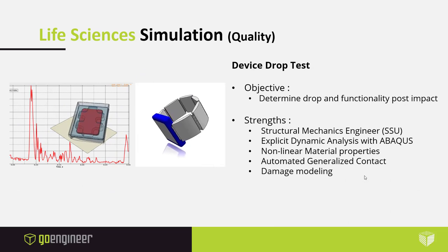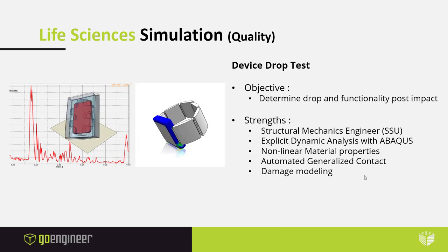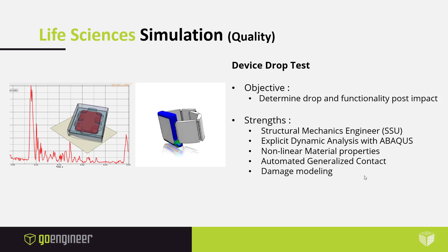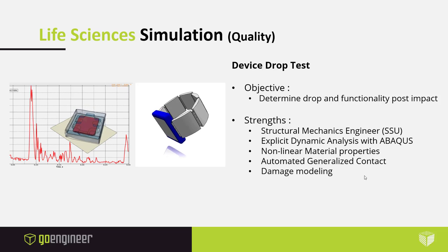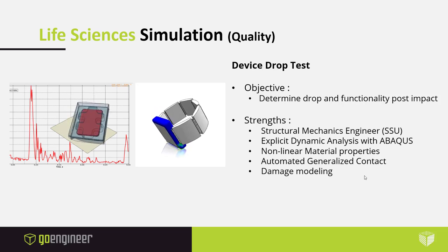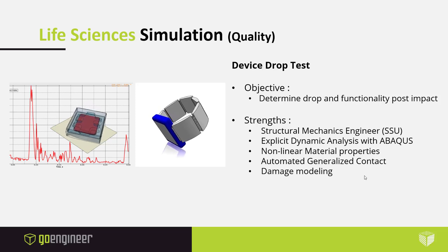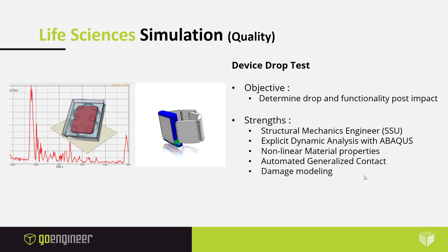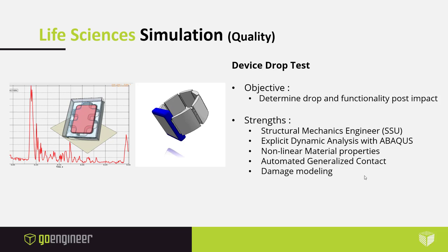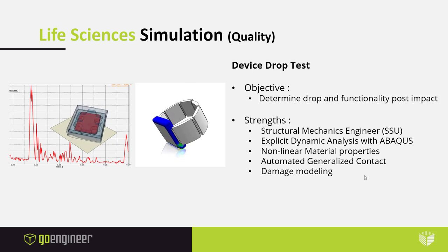Another example many are familiar with is drop testing devices. Simulia technology is used to simulate actual drop tests and test product functionality after impact. The explicit solver with Abaqus was utilized, with non-linear material properties coupled with damage modeling to study product behavior in high-impact environments.